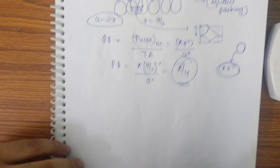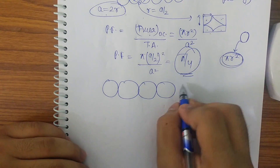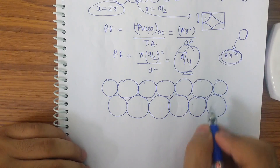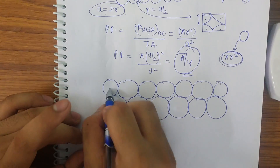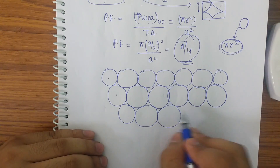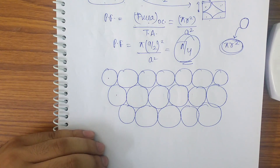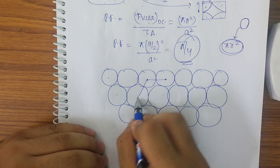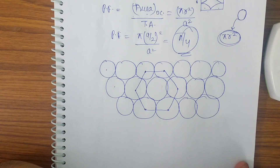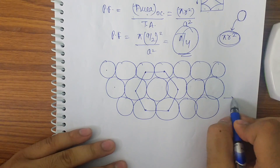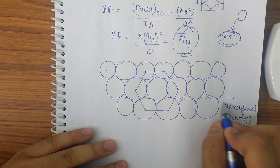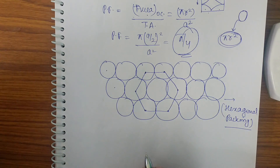Now, if instead we place the layers offset — where the center of one row is not directly below the center of the row above — this gives a different arrangement. Adding more layers this way creates hexagonal packing in two dimensions. Remember the difference: square packing and hexagonal packing are both types of 2D packing and questions can be based on both.